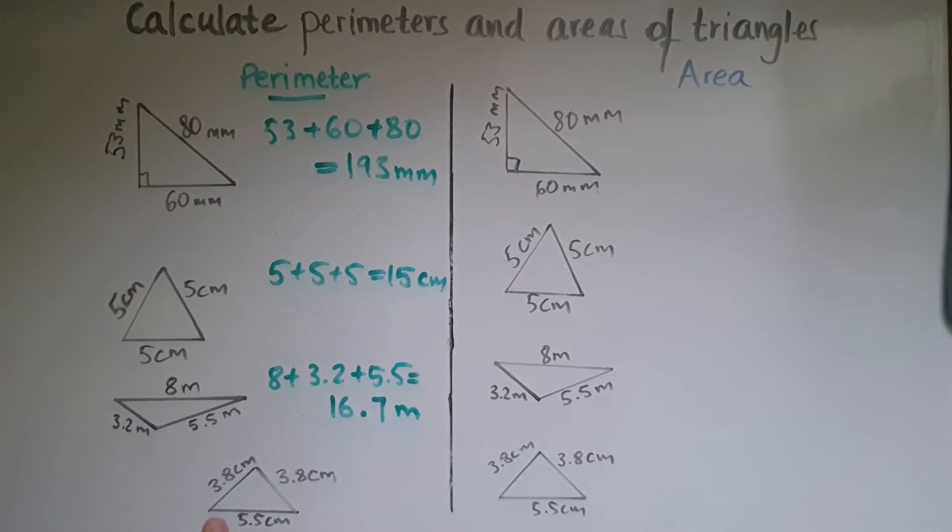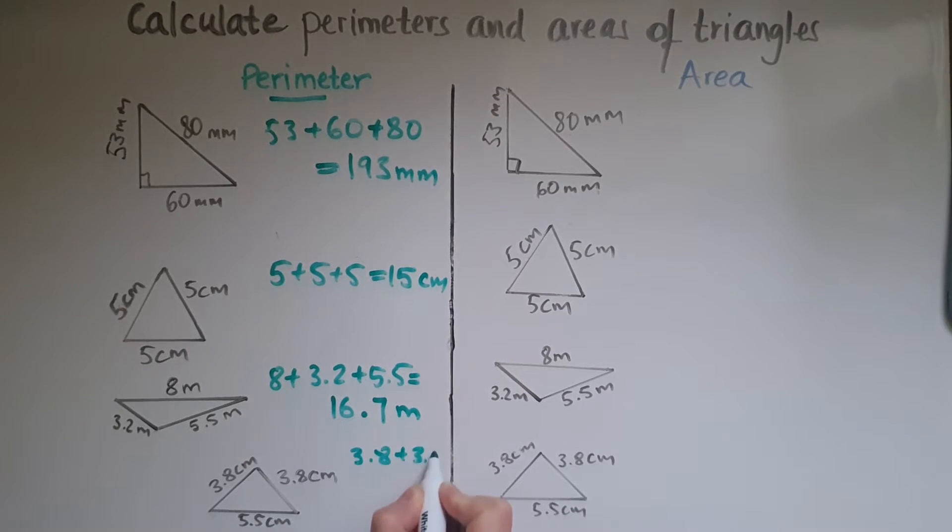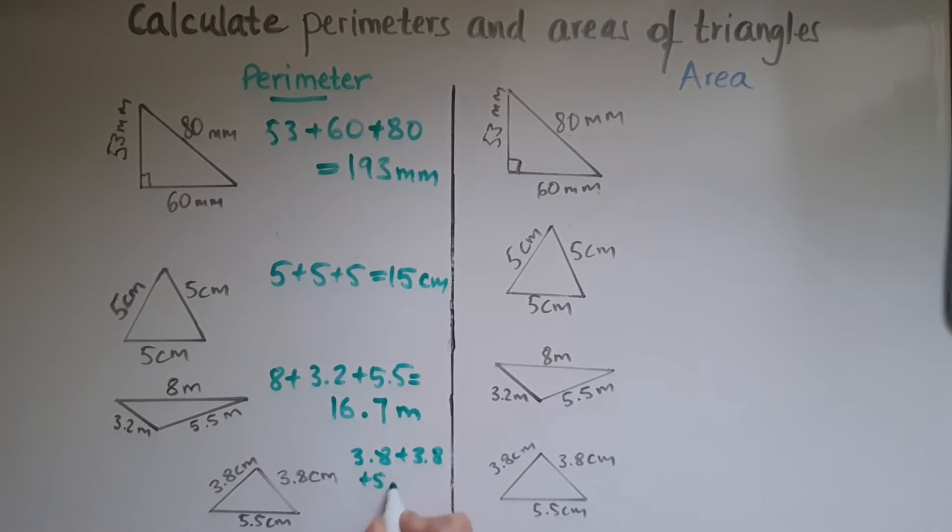Finally, we have this triangle here. So we follow the same procedure. We have 3.8, add 3.8, add 5.5. That equals 13.1 centimeters.